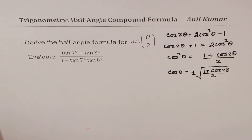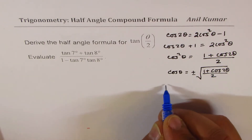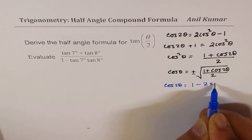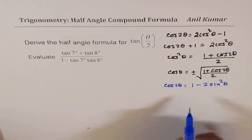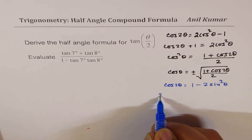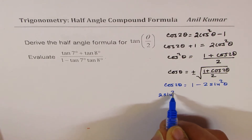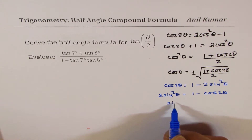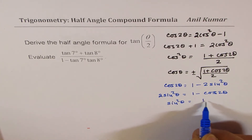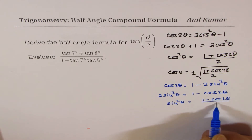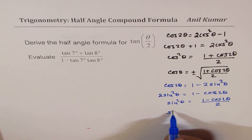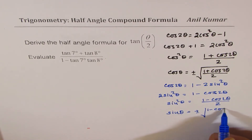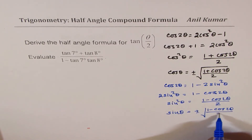Another formula for cos(2θ), which is the double-angle formula known to you, is that it equals 1 minus 2sin²θ. Rearranging this, we get 2sin²θ equals 1 minus cos(2θ) divided by 2, or sin θ equals plus or minus the square root of (1 minus cos 2θ)/2.